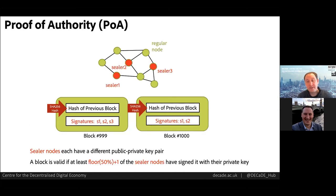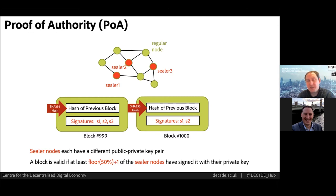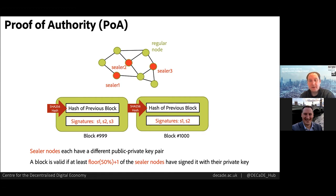That brings us to proof of authority DLT, which is a more scalable solution and one we see applied most often in practical DLT solutions. In a POA DLT, anyone can read data on the chain — it's transparent as before — but only a closed set of nodes, the clique, can write new blocks. We have two classes of node: regular nodes that act as repeaters propagating data around, and sealer nodes that actually commit new data to the chain. Each sealer has its own public-private key pair and signs blocks cryptographically. At least 50% of the sealers on the chain must sign a block for it to be the next valid block.